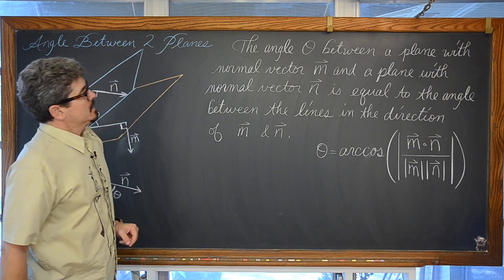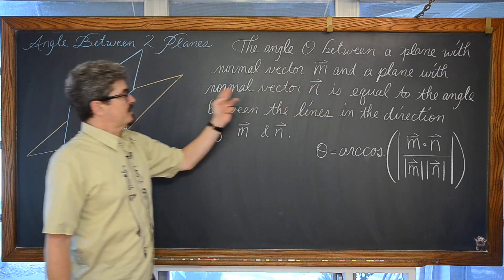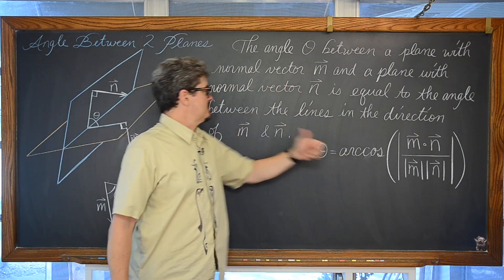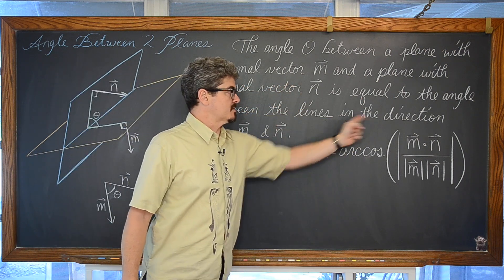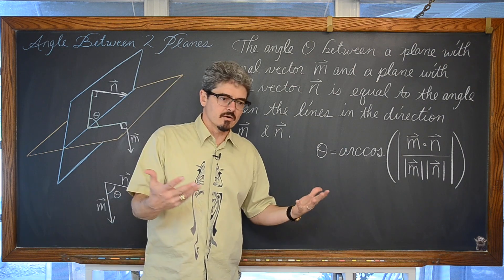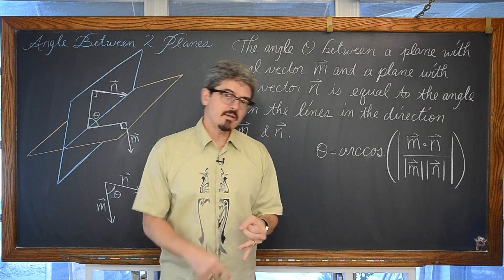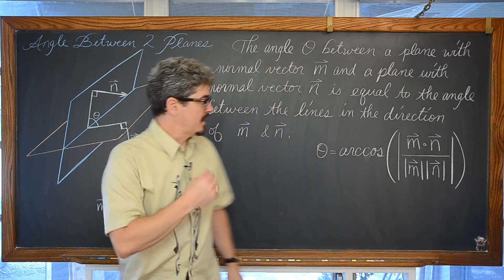The angle theta between a plane with normal vector m and a plane with normal vector n is equal to the angle between the lines in the direction of those two vectors. So there's going to be a similarity here between finding the angle between two lines and the angle between the intersection of two planes.